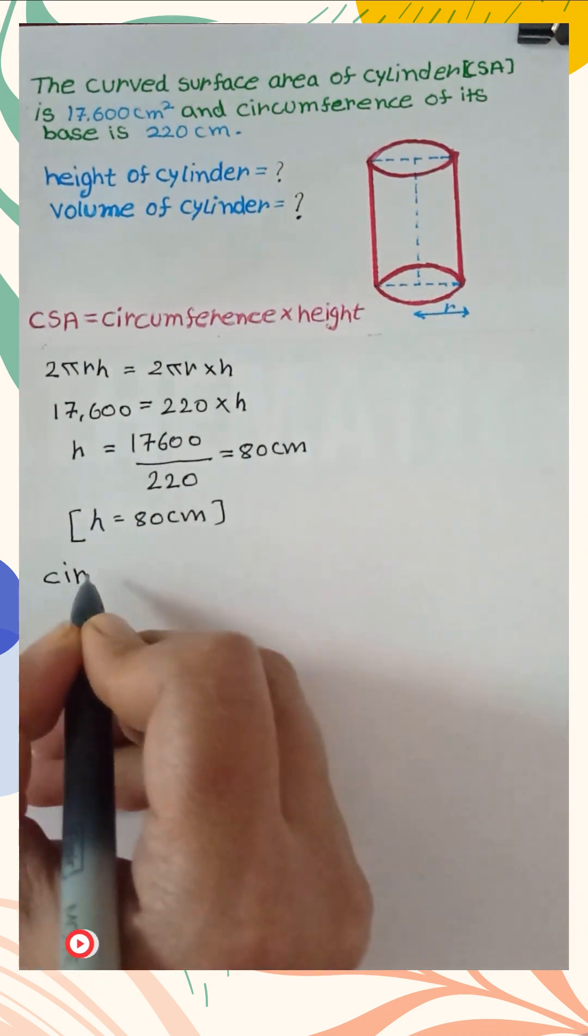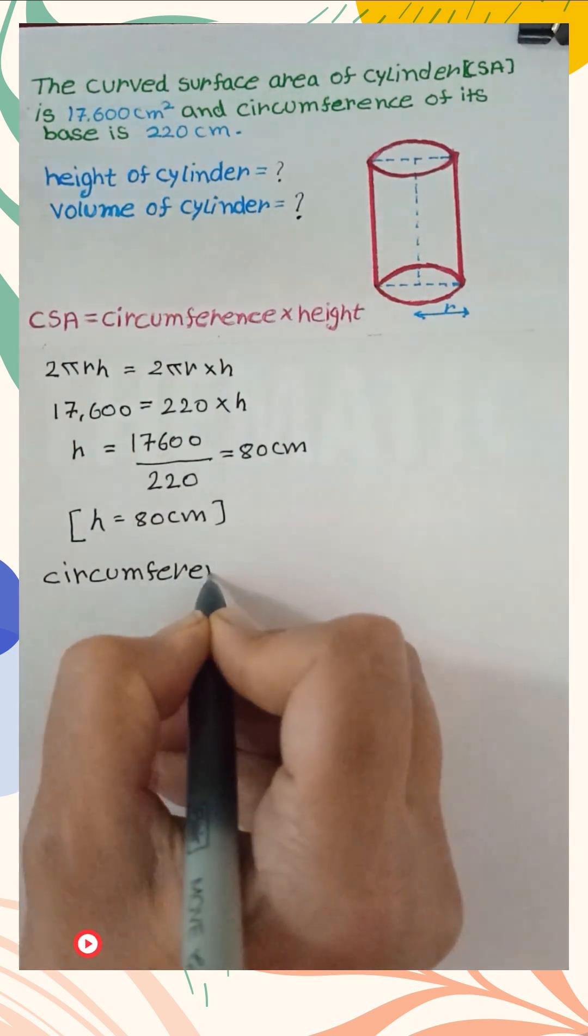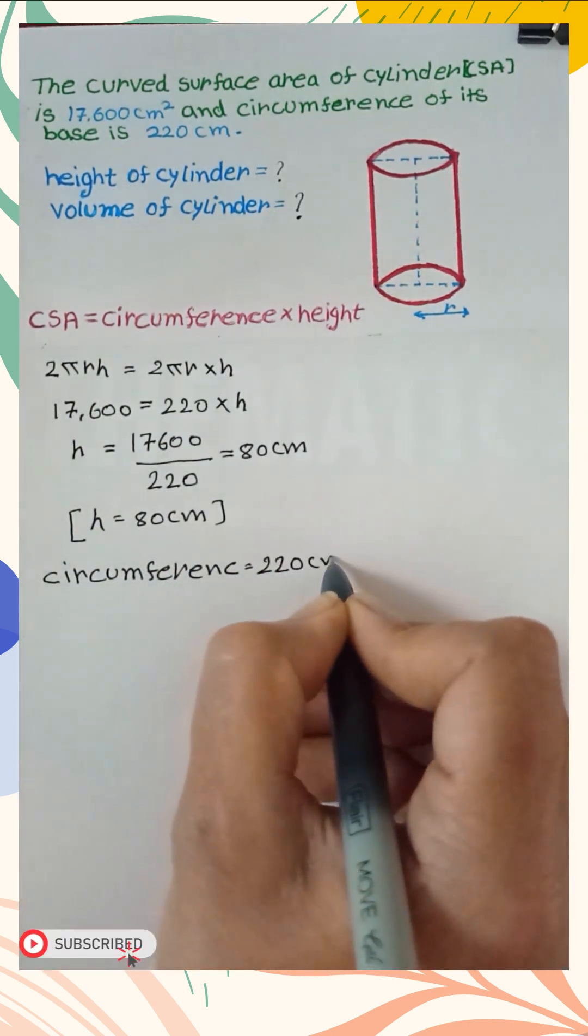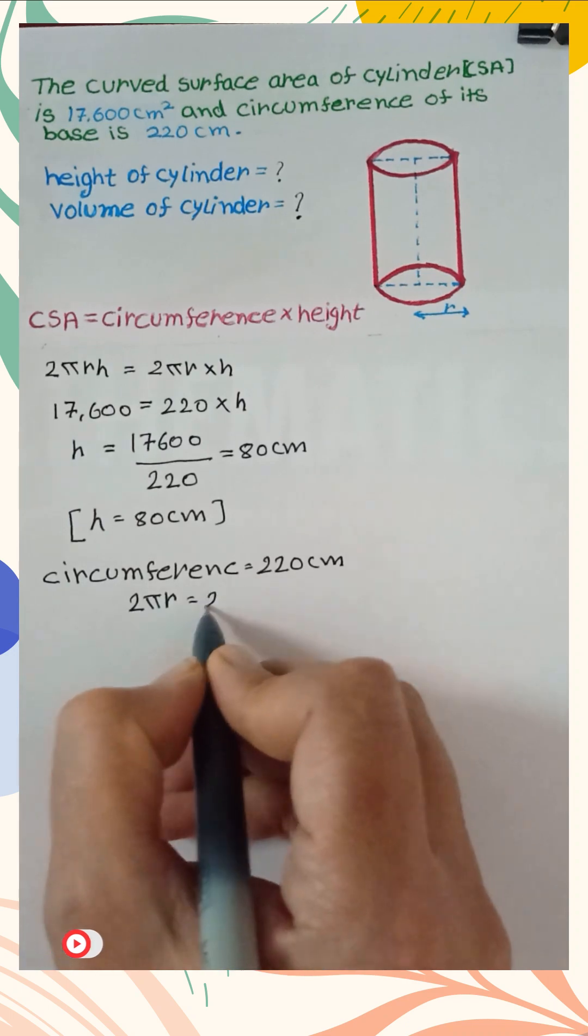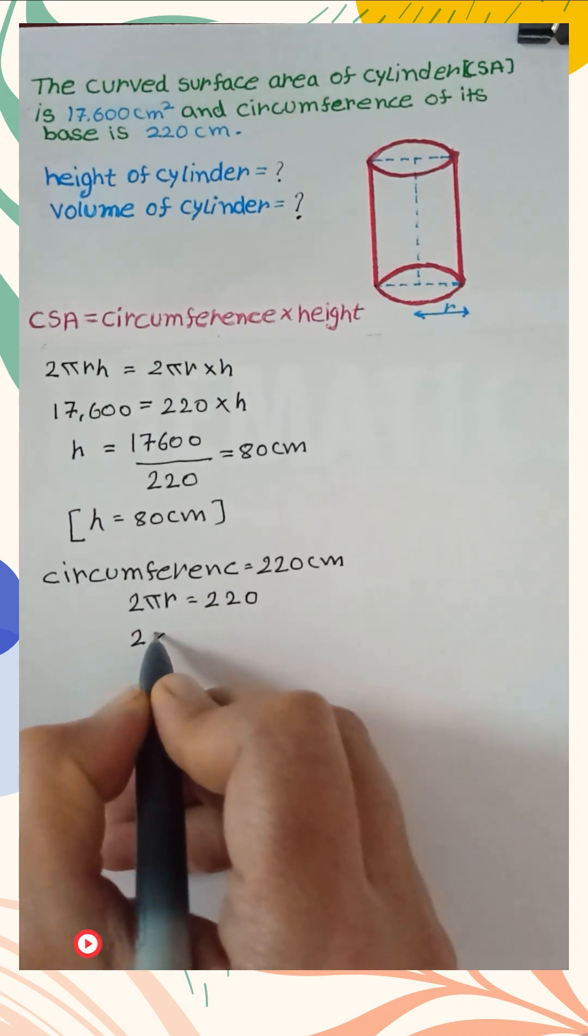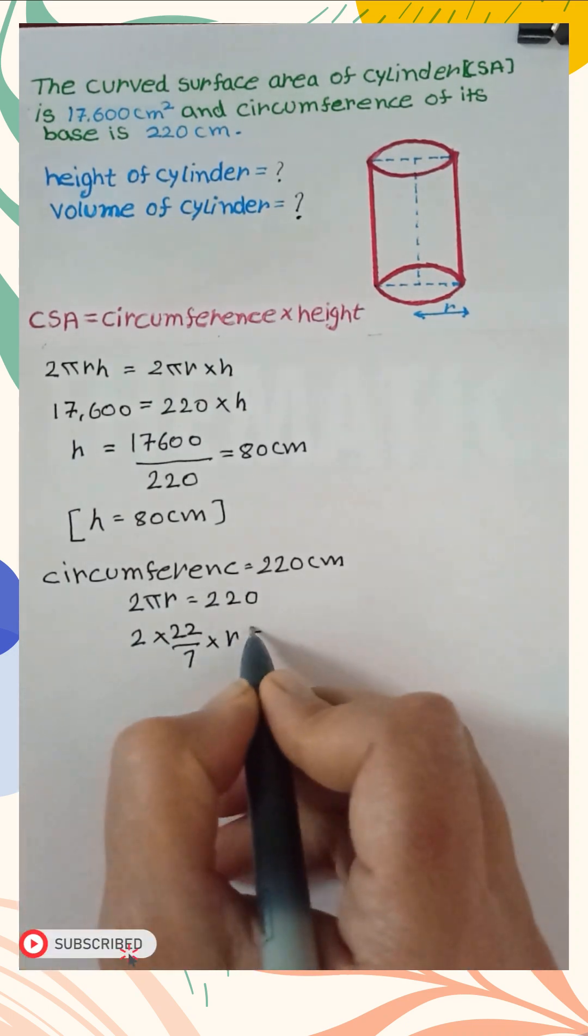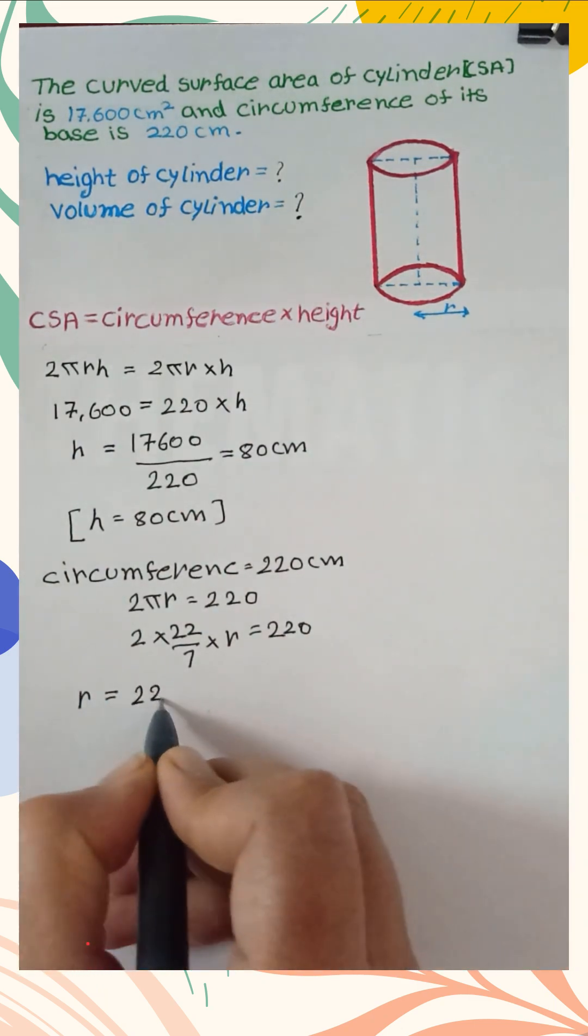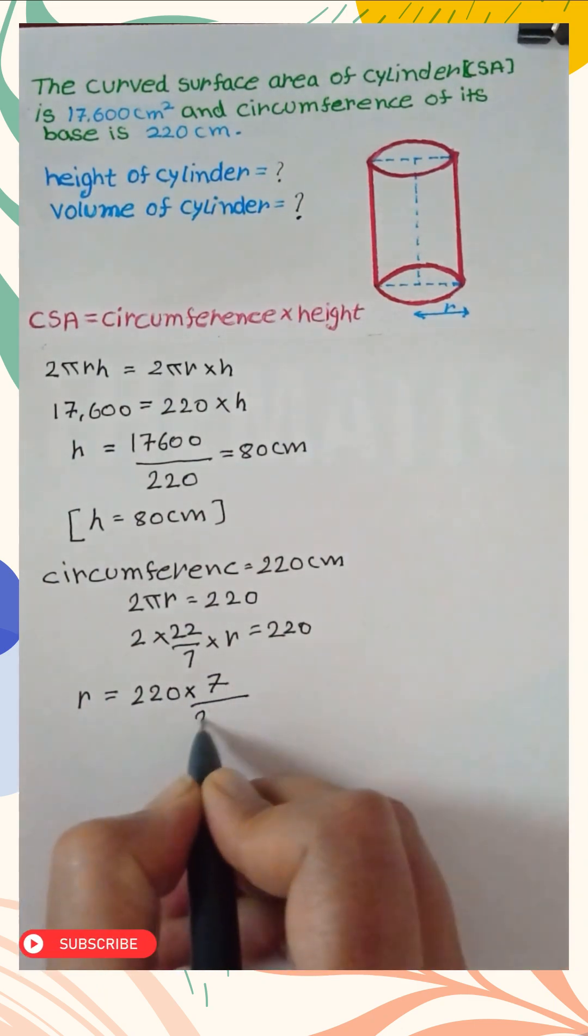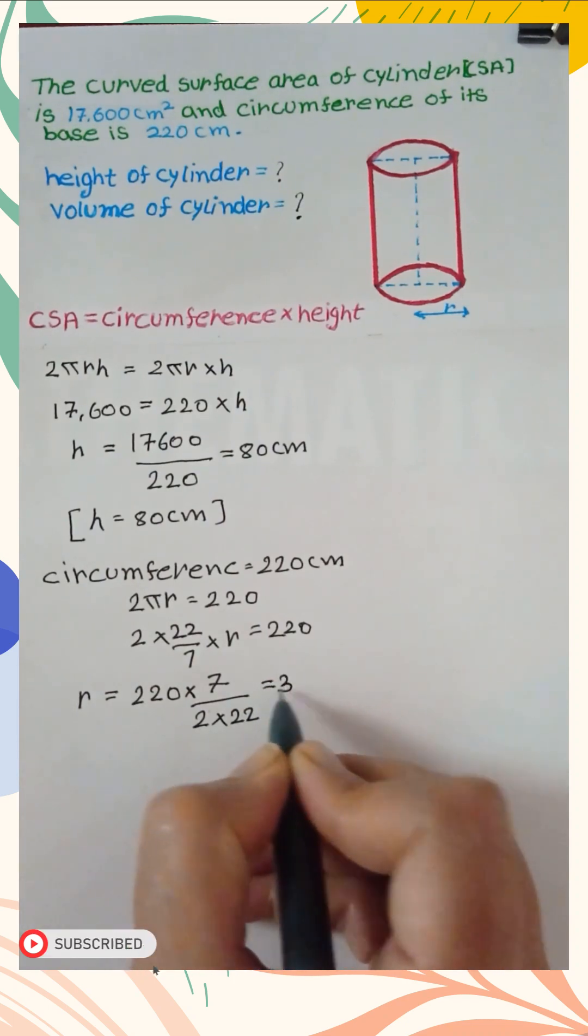Now from the circumference we find the radius. Since circumference 2πr is 220 cm, after putting all values we get the radius which is 35 cm.